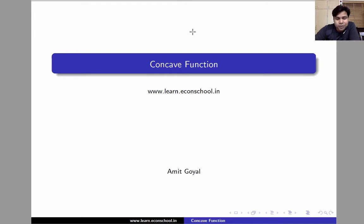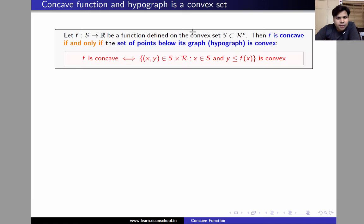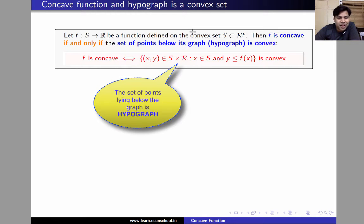Welcome. In this video, we'll continue our discussion of concave functions and we'll talk about an important characteristic of a concave function. Let f be a function defined on a convex set S. Then f is concave if and only if the set of points lying below its graph is a convex set.